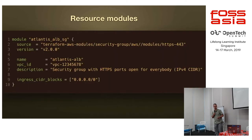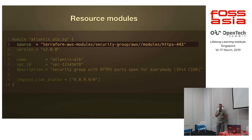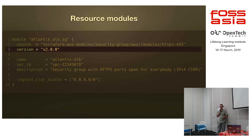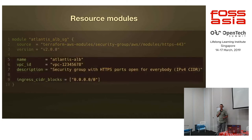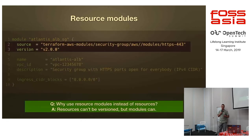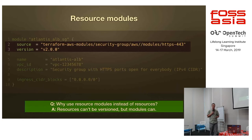This is an example of a security group module which is fetched from a specified endpoint — in this case the Terraform registry. We specify which version of this module we want and we specify different arguments to pass into this module. The reason why a resource module is necessary is that it is possible to version it as a whole, while individual resources cannot be versioned.